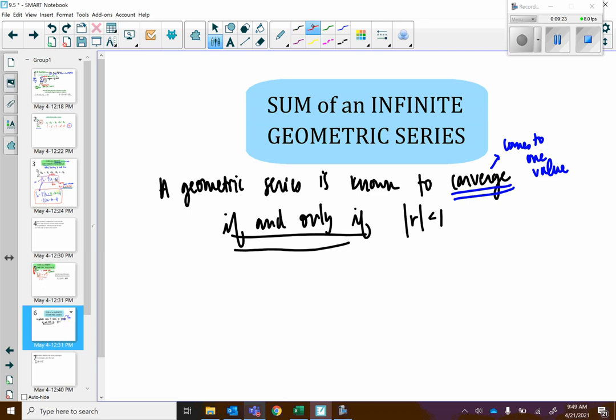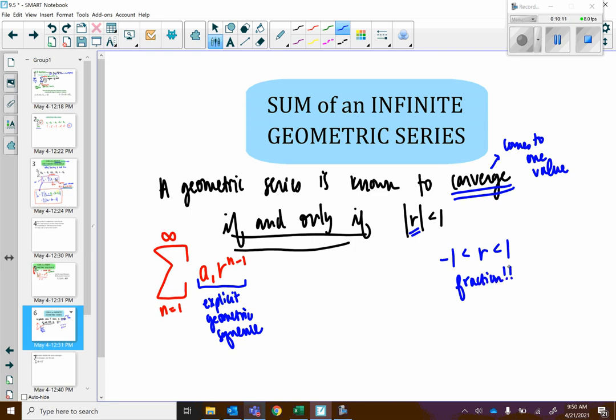We are talking about a geometric series. So we are adding together all the terms from n equals 1 to infinity of a sub 1 times the quantity r to the n minus 1. This is, remember, the explicit formula for a geometric sequence. If this value of r, if the absolute value of it is less than 1. So, another way to put this would be that r is between 1 and negative 1 or that r is a fraction.